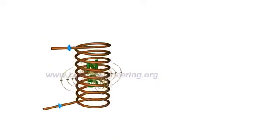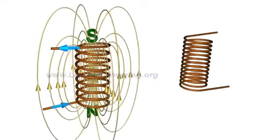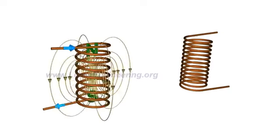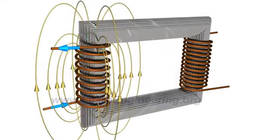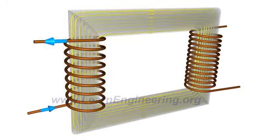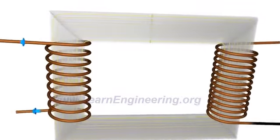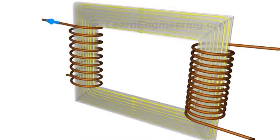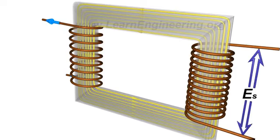This magnetic flux can be effectively linked to a secondary winding with the help of a core made up of ferromagnetic material. This fluctuating magnetic field will induce an EMF in the secondary coils due to electromagnetic induction.